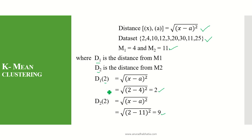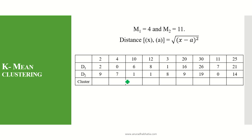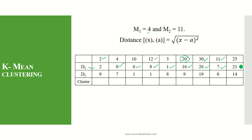In this way, all item set values are calculated and the distance matrix table is formed. For D1 with mean 4: item 2 gives 2, item 4 gives 0, item 10 gives 6, item 12 gives 8, item 3 gives 1, item 20 gives 16, item 30 gives 26, item 11 gives 7, and item 25 gives 21.